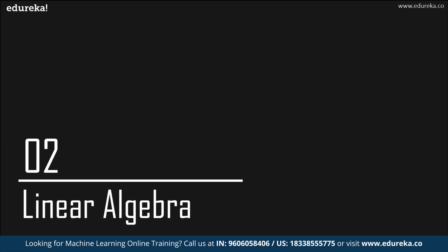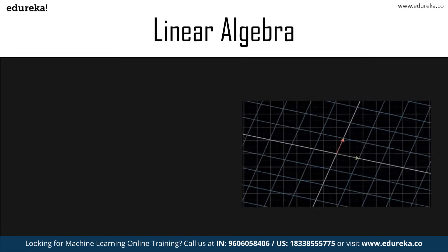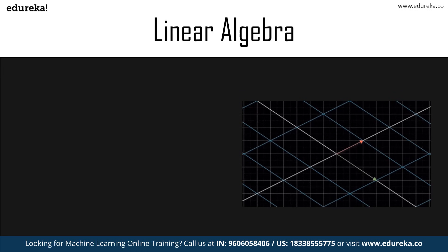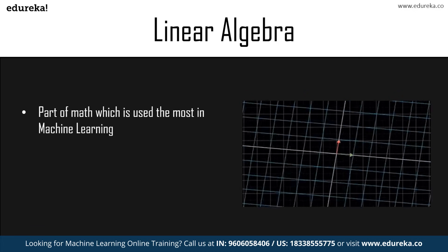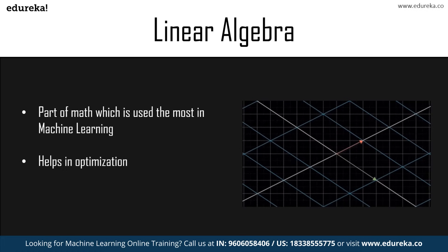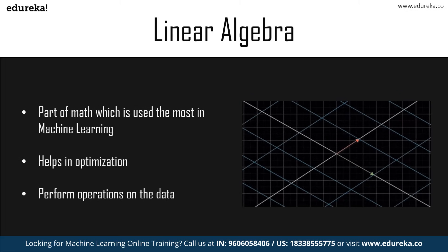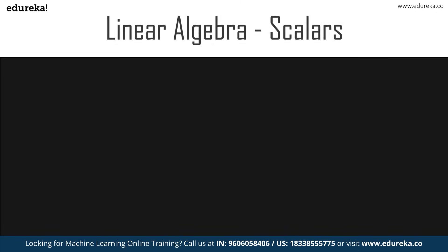We shall kick off with linear algebra. Linear algebra is used most widely when it comes to machine learning. It covers so many aspects, making it unavoidable if you want to learn mathematics for machine learning. Linear algebra helps you in optimizing data — operations that can be performed on pixels such as shearing, rotation, and much more. So let's move over to the first topic in linear algebra: scalars.